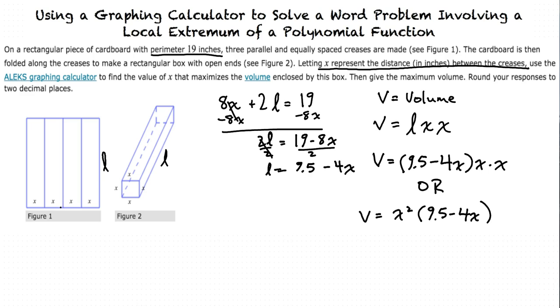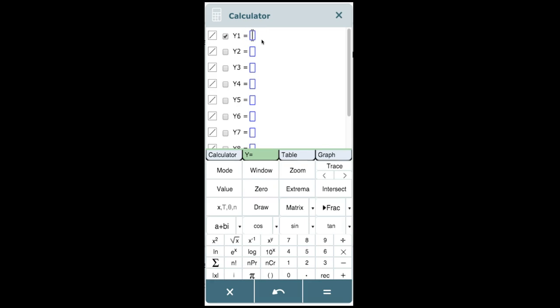Is that an equation that we can now graph on a calculator? Yes, and that's what we'll do right now. Under y equals, under y1, we type in x squared times 9.5 minus 4x.